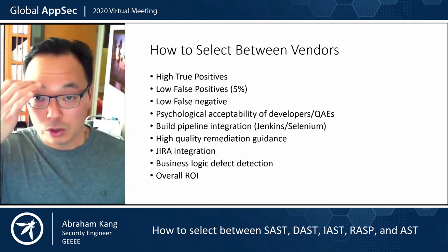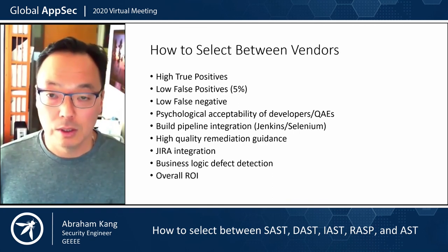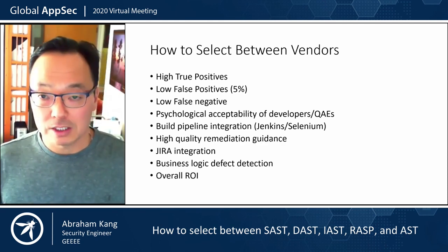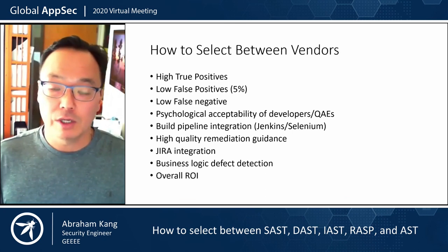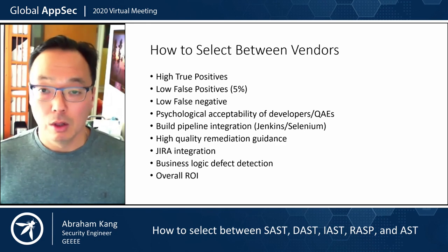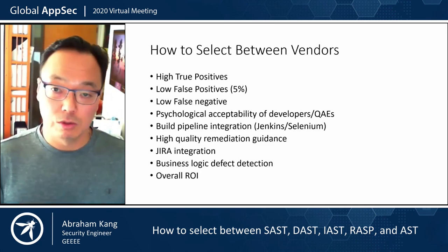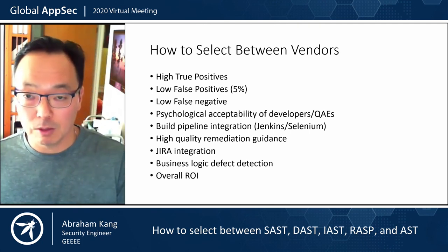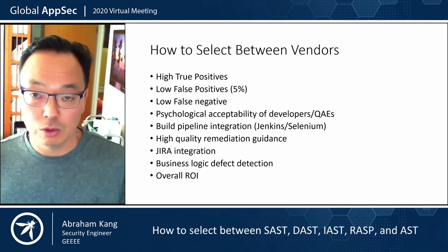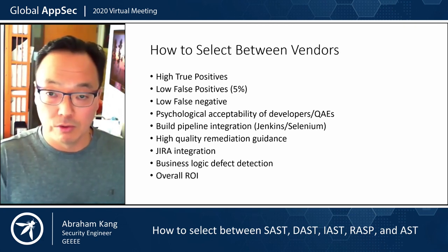Once you've selected which of these tools you want to use — the generalized category — the next step is to select among the vendors. When you are looking at different vendors, you want to assess them based upon having high true positives, meaning actually finding real results; having low false positives, meaning not reporting things that aren't real vulnerabilities; and also low false negatives, meaning you don't want it to miss a lot of stuff. You also want a tool that the developers and QA engineers are going to buy into, feel comfortable using, and trust the results — because then they're going to be more willing to fix the reported vulnerabilities output by the tool.